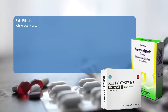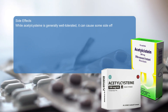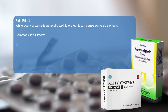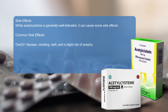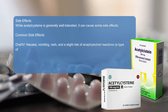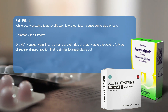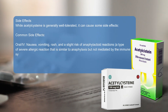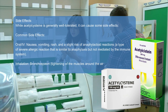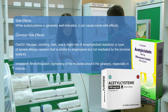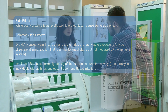Acetylcysteine side effects: While acetylcysteine is generally well-tolerated, it can cause some side effects. In oral or IV form, common side effects include nausea, vomiting, rash, and a slight risk of anaphylactoid reactions — a type of severe allergic reaction similar to anaphylaxis but not mediated by the immune system. In case of inhalation, side effects include bronchospasm (tightening of the muscles around the airways), especially in individuals with asthma, as well as unpleasant odor and throat irritation.